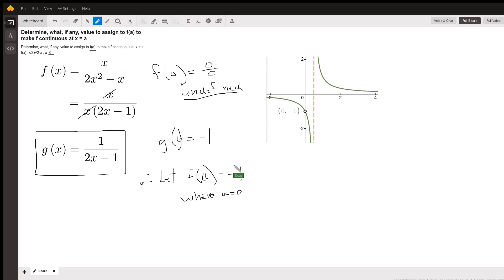Therefore, if we let f(a) equal -1, we will have a continuous function, and we will actually fill in this hole.